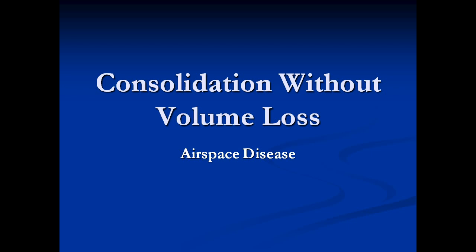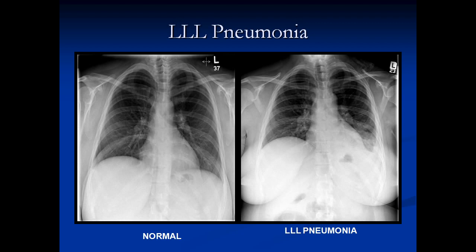Here we have a patient's normal chest x-ray on the left side. On the right side we have lost the diaphragm completely — if you look through the heart, you can tell there's white stuff back there, and this is consolidation. There's an air bronchogram going down there and no volume loss, so this is what a left lower lobe pneumonia looks like.